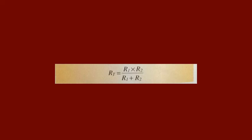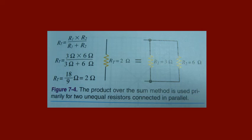The product over the sum method is used as a quick way to solve for total resistance when there are two resistances connected in parallel. The product is the term for the answer to a multiplication problem, and sum is the answer to an addition problem. In figure 7-4, a 3-ohm and a 6-ohm resistor are connected in parallel; the total resistance for the circuit is 2 ohms.